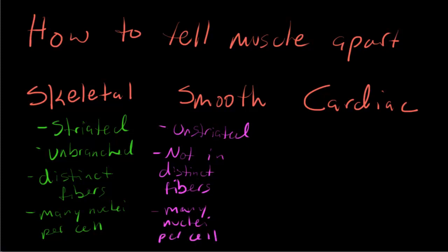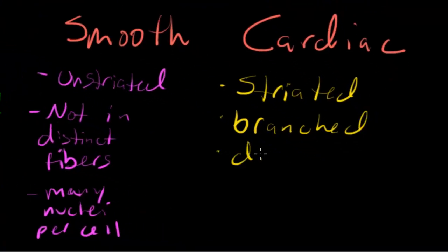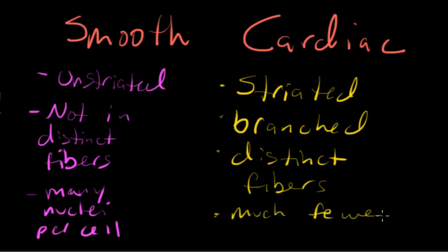And then cardiac muscle is going to be striated, but not as evidently striated as skeletal muscle. The striations are going to be more subtle. It is branched unlike the other two. It is in distinct fibers. And generally you're only going to see two nuclei per cell, so much fewer nuclei.